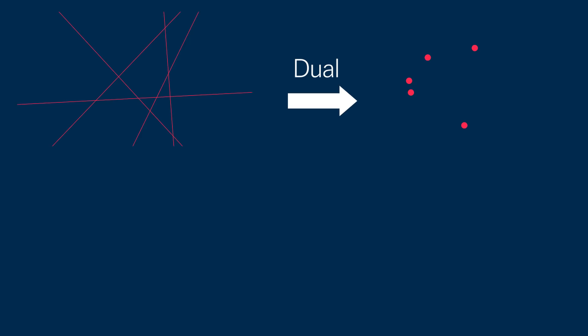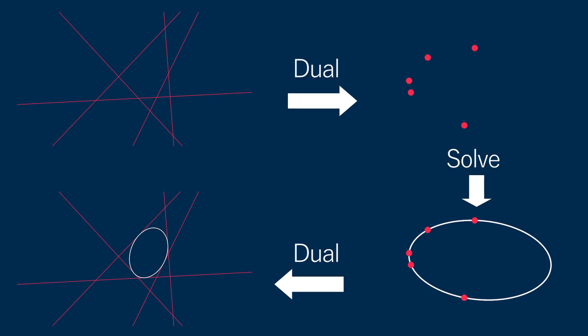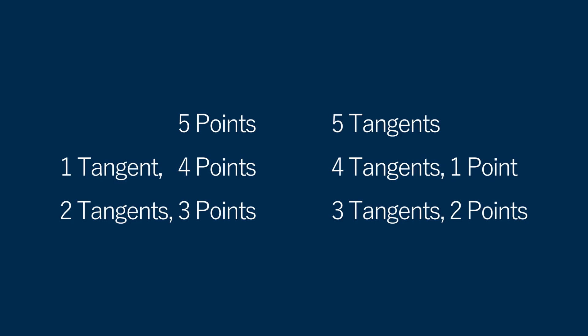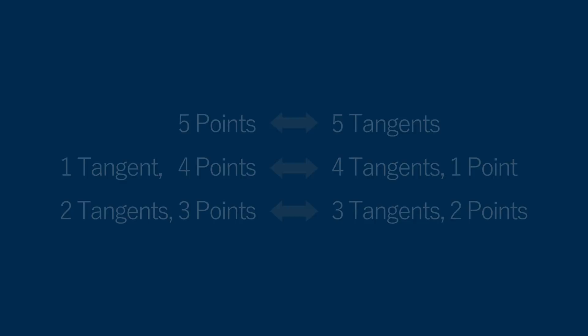The amazing thing is, we can transform the problem of 5 tangent lines to one of 5 dual points, solve for the conic, and then find the dual conic to solve the original problem. So if we have any algorithm to solve one of these problems, we automatically can solve the dual problem.